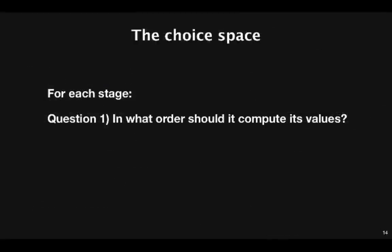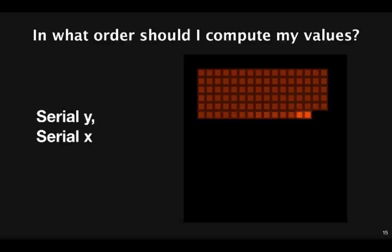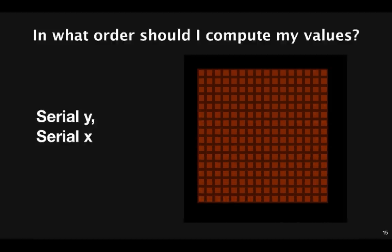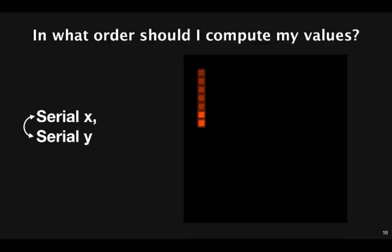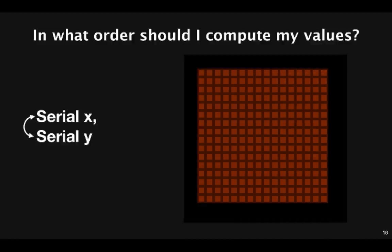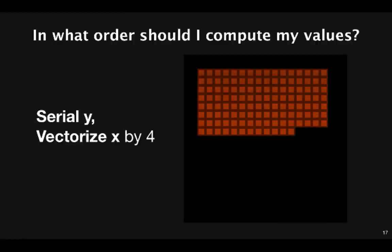Let's try to get a full handle on the space of choices we could have made. In general, in an imaging pipeline, there are two questions you must answer for each stage. The first is, in what order should that stage compute its values? The most common way to traverse a region is in scanline order. This means we traverse a region of a function sequentially across y, and within that, sequentially across x. This walks down scanlines just like the loops you would typically write in C. We can transpose the x and y dimensions, which gives a column major traversal. Or we could go back to scanline order, but traverse the x dimension in vectors of width 4.